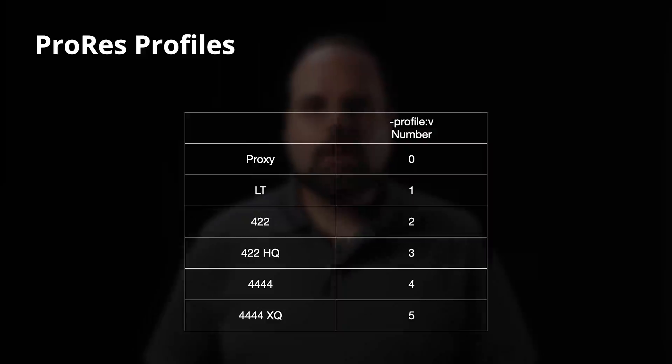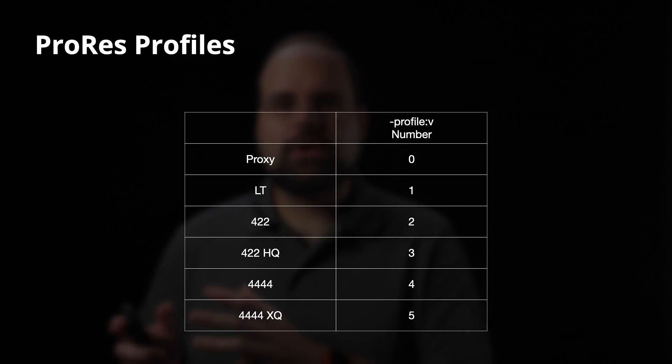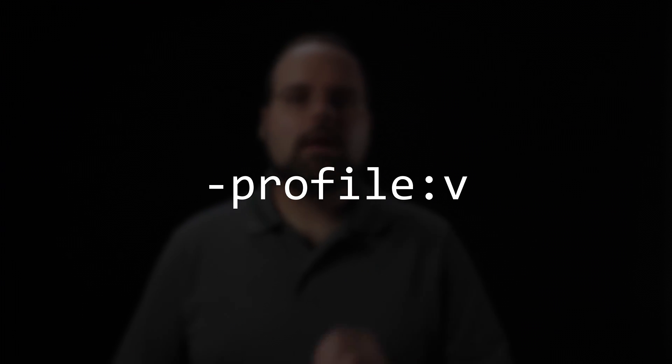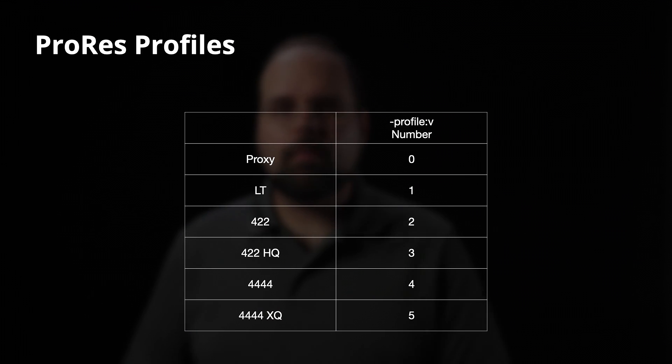The ProRes profiles are Proxy, LT, 422, HQ, 4444, and 4444 XQ. In FFmpeg these are specified using the -profile:v command followed by a number from 0 to 5, with 0 being Proxy, 1 being LT, 2 being 422, and so on. Typically when I use ProRes I either use LT or 422 for my workflow going to YouTube, so I would be using profiles 1 or 2.